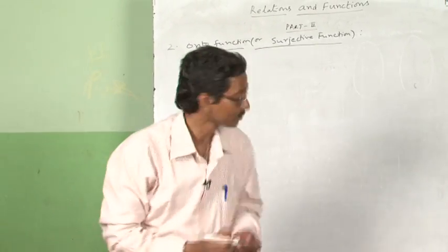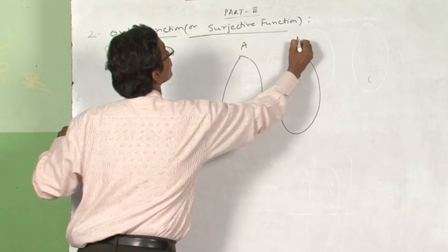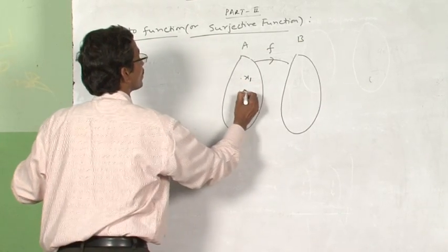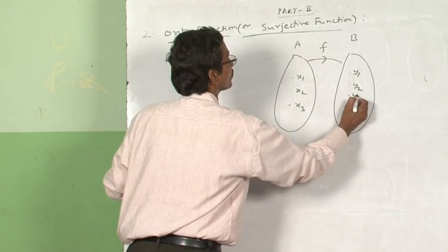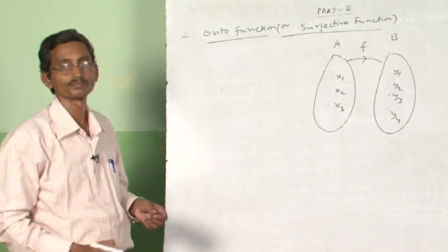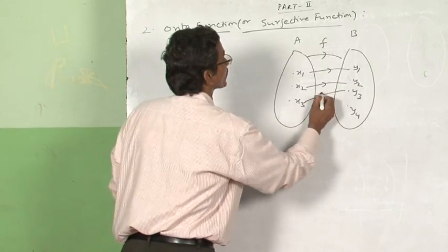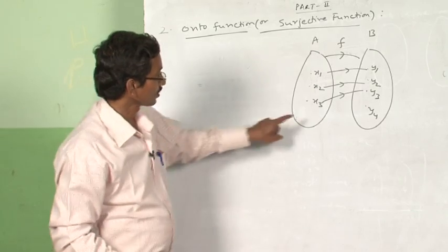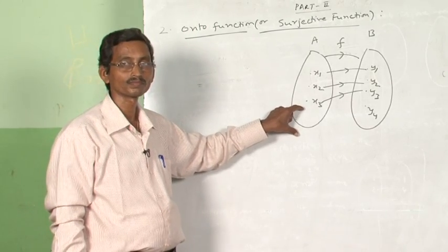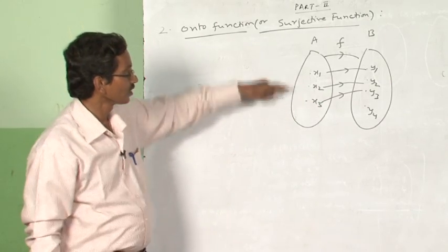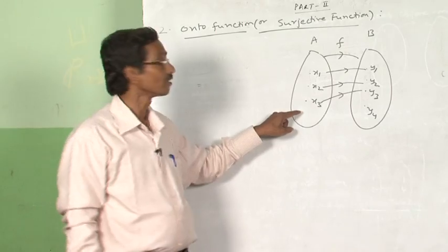We will take an example. Consider two sets where X1, X2, X3 are three elements of set A, and Y1, Y2, Y3, Y4 are elements of set B. X1 is connected to Y1, X2 is connected to Y2, and X3 is connected to Y3. Here Y4 does not have a preimage in the set, so it is not an onto function.